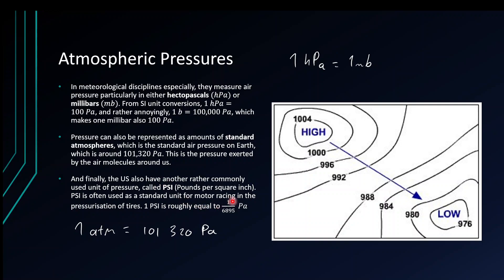And if that wasn't enough, the US has another unit mostly used for gaseous things like pumping tires, known as pounds per square inch, or PSI. PSI is also used in diving gear when considering pressure underwater, which is what one of the example questions covers. 1 PSI is 1/6,895th of a pascal, or equivalently, 1 pascal is 6,895 pounds per square inch.